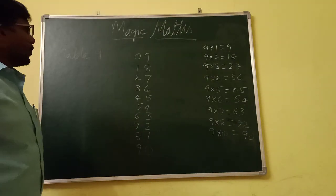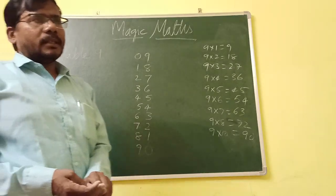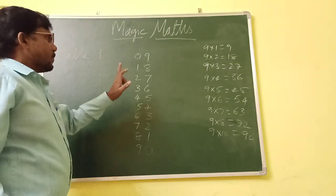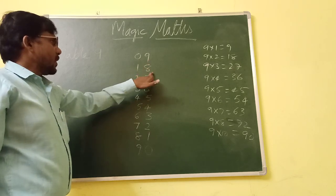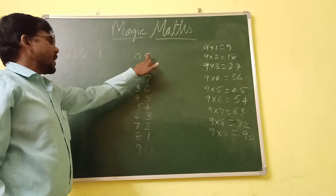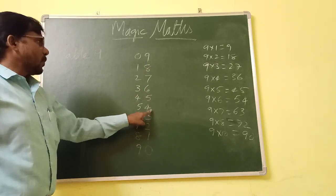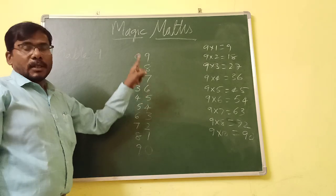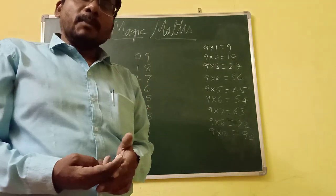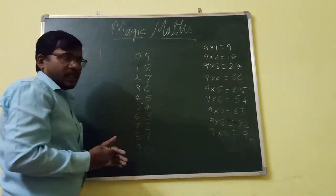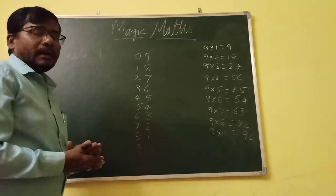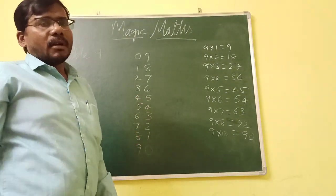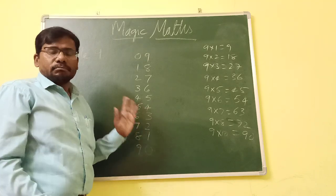I think you know already this method. This is the way to find out table 9. And in this one more thing, when table 9, the sum of the two digits must be equal to 9. See, 0 plus 9 is 9, 1 plus 8 is 9, 2 plus 7 is 9, 3 plus 6 is 9, 4 plus 5 is 9, and so on. This is the magic of table 9.